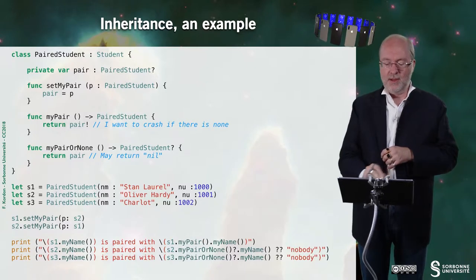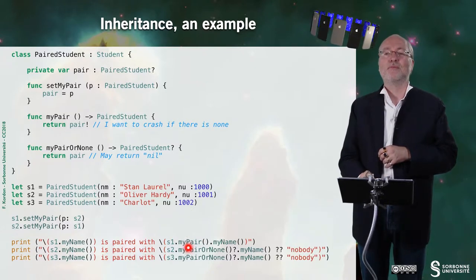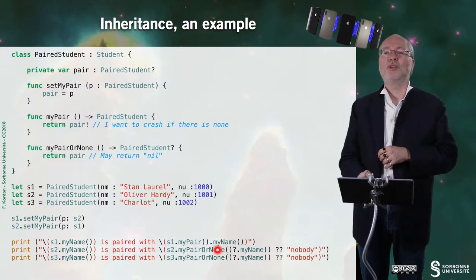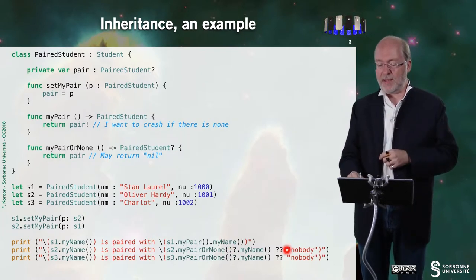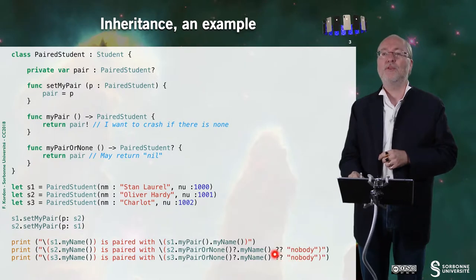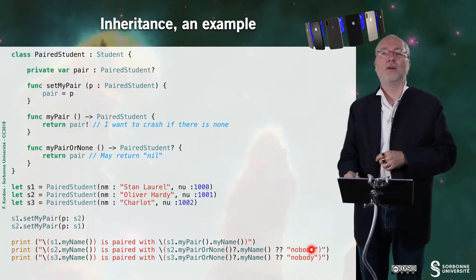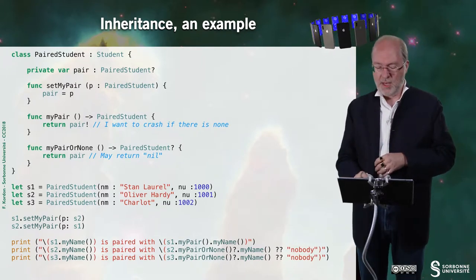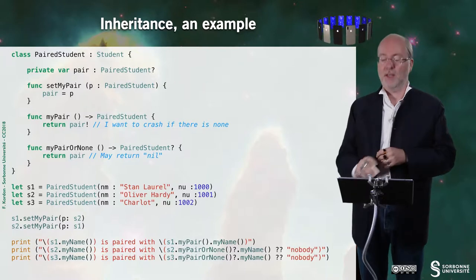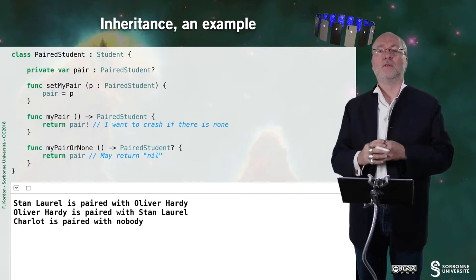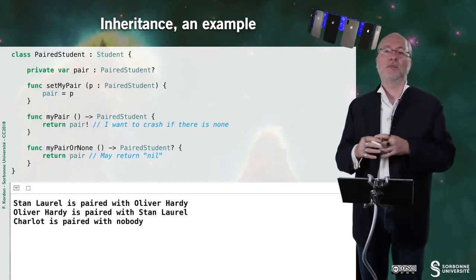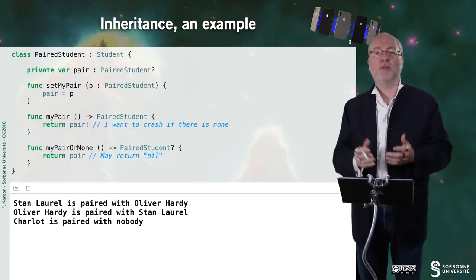But of course if I do that, it's unsafe. It's better to do that because I do my pair or none question mark. It means if I get nil, then I will get nil. And since I do that, I have to provide a default. So if the result of this expression is nil, then I provide a default value. And this is the same with S3. So it's not a surprise that Stan Laurel is paired with Oliver Hardy, Oliver Hardy is paired with Stan Laurel, and Charlo is paired with nobody.